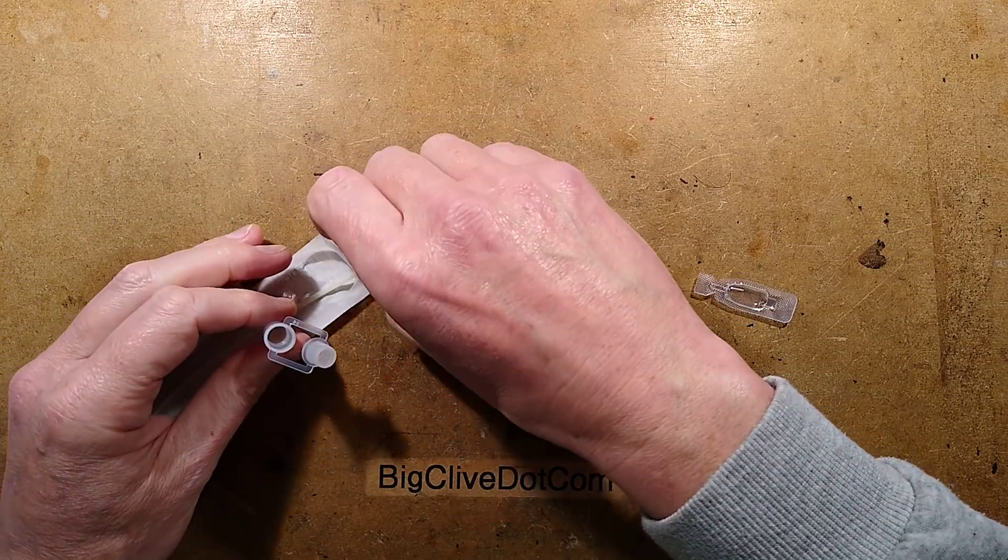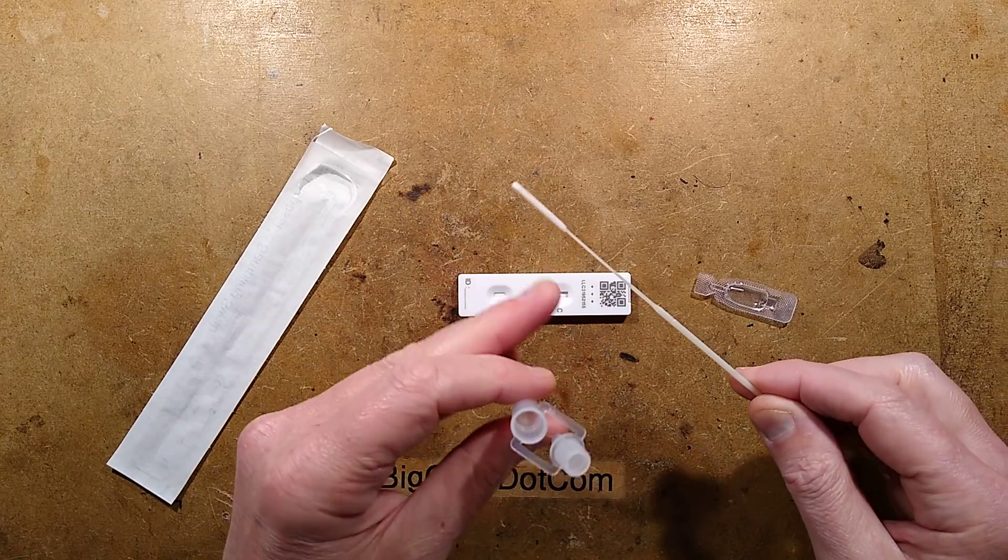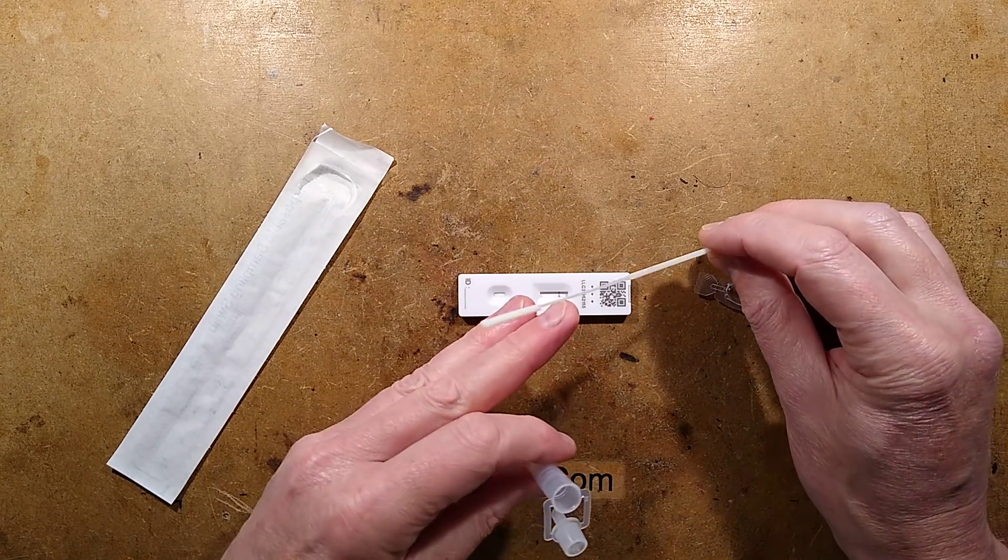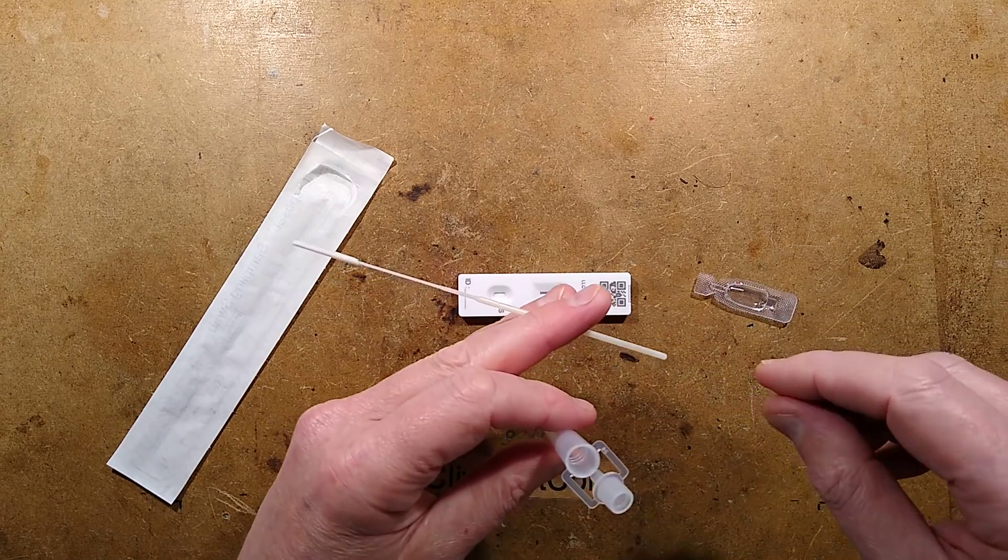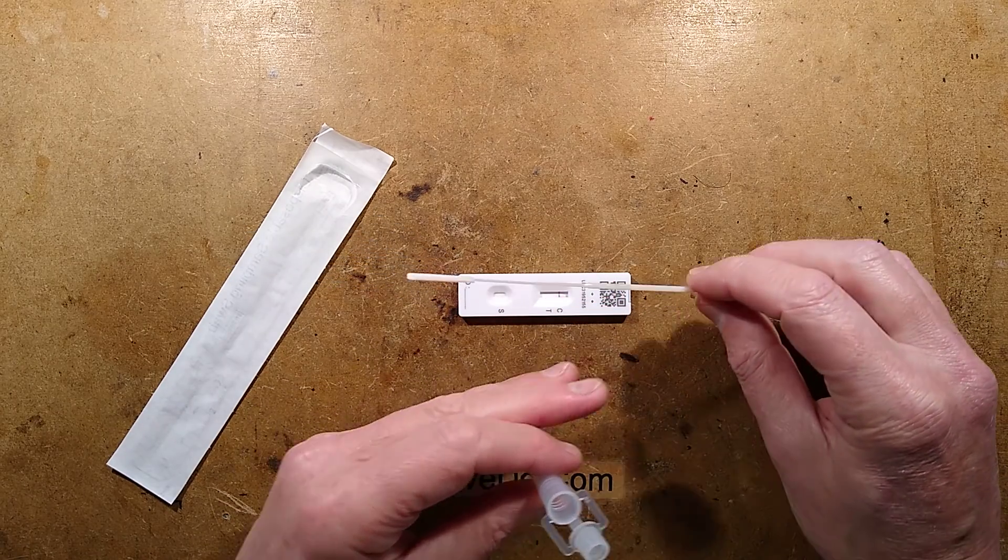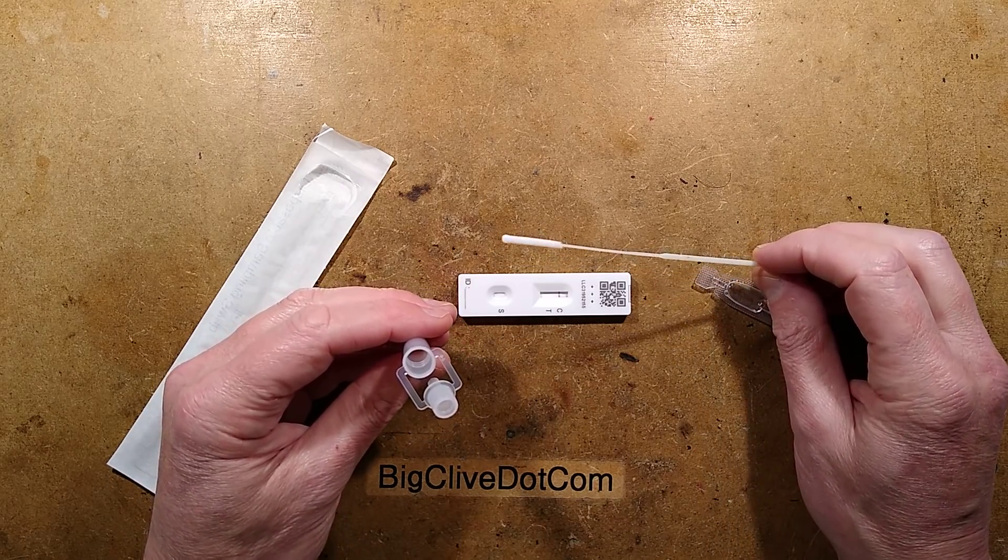And this is absolutely the worst bit - you get this little cotton-tipped swab and you have to stick it into the back of your throat. That's the tonsil area. I don't have tonsils, but that area. And then you rub it around either side. That's when you gag - just about made me throw up.